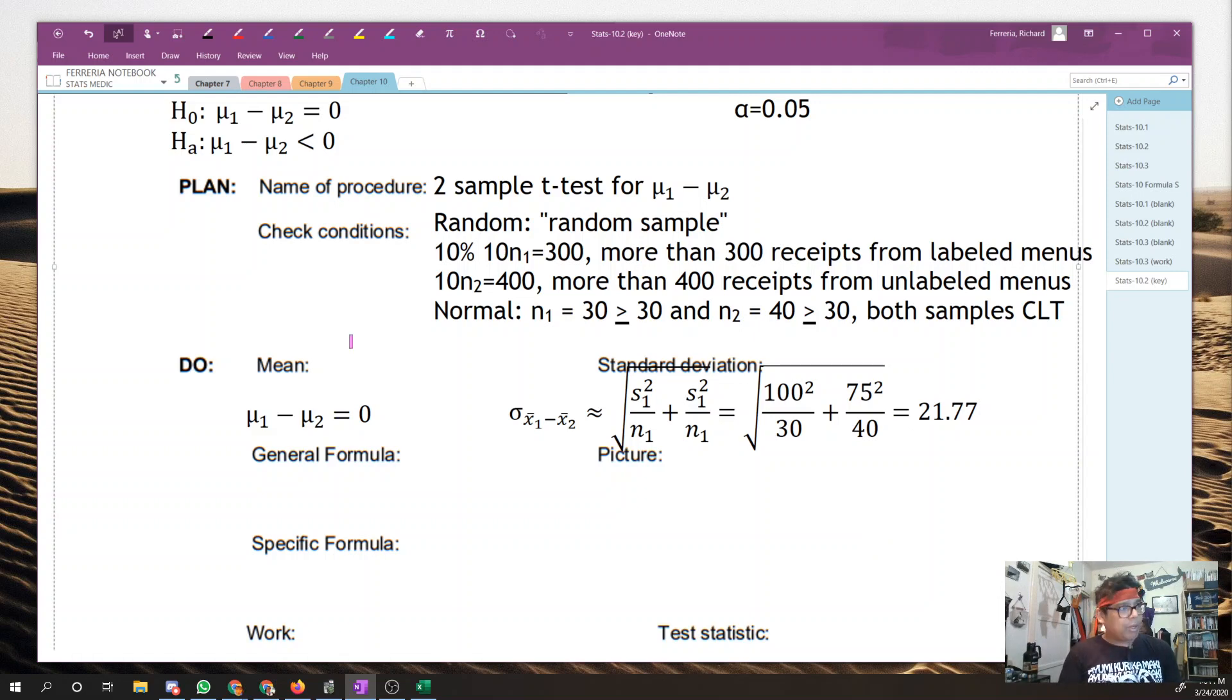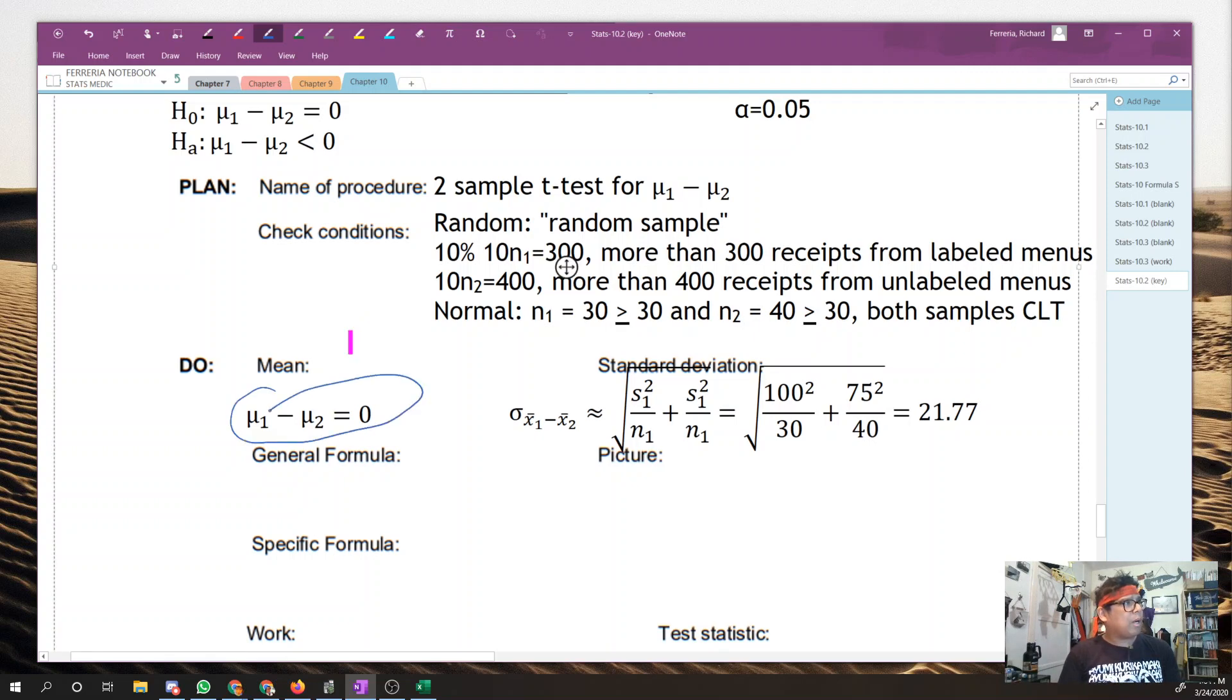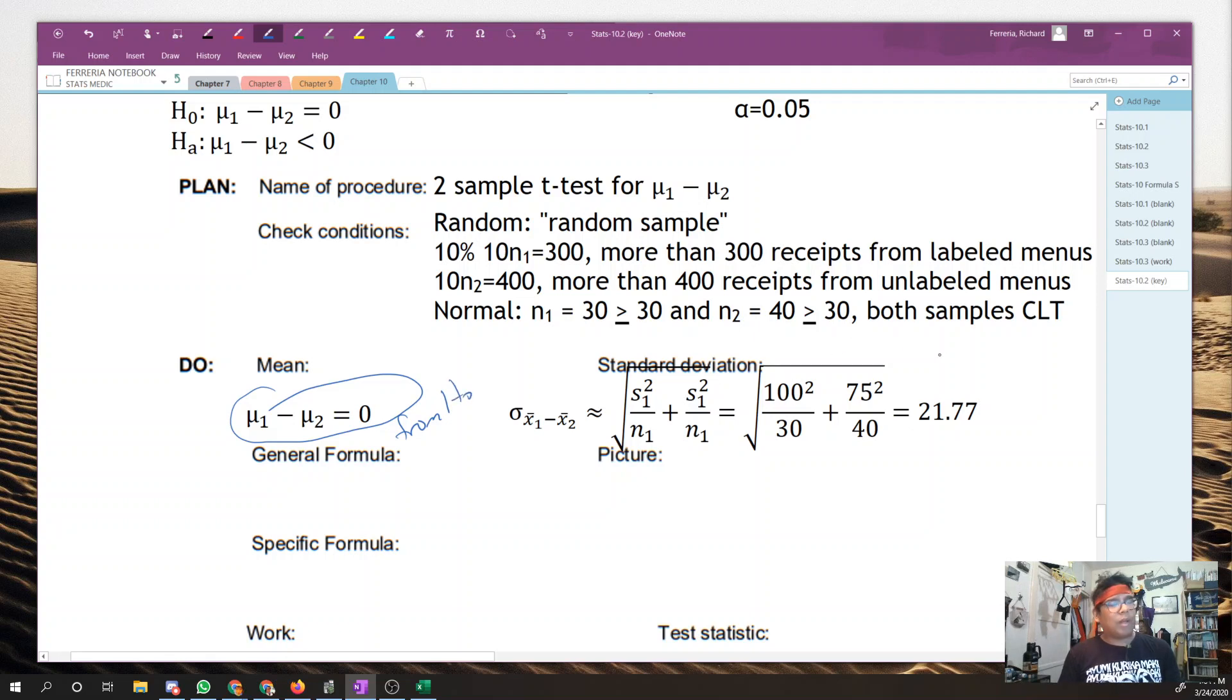There is also here your formula for the standard deviation. That comes from our box, right? That's from the addition of the variances. So we got 21.77, we got zero. We're ready for a general formula and a picture and a specific formula. Go ahead and work on that. General formula, picture, and specific formula.